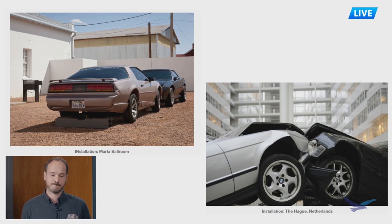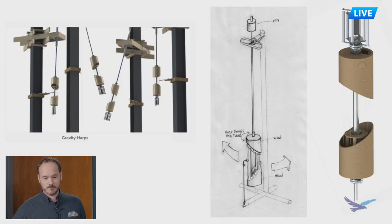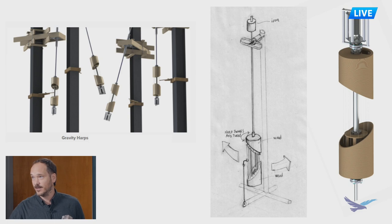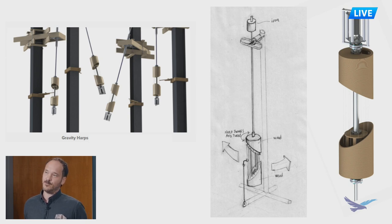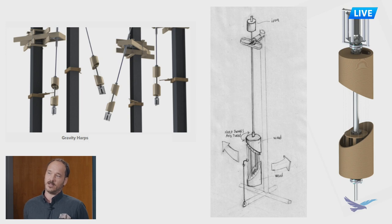Switching gears to the Gravity Harp by artist Andy Cavatora, also in New York. It's a swinging harp in the shape of a barrel, with strings around it that can be indexed via an electric motor and a computer. As it swings like a pendulum back and forth, there's a pick on the ground that can pluck a note, and the computer indexes the barrel to get whatever note you want.